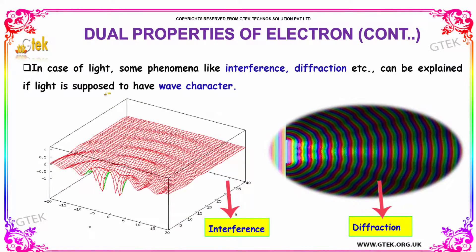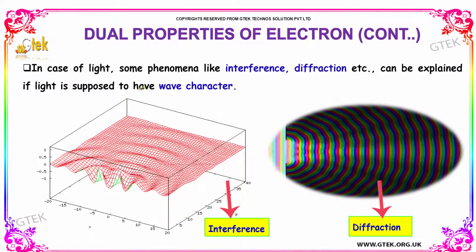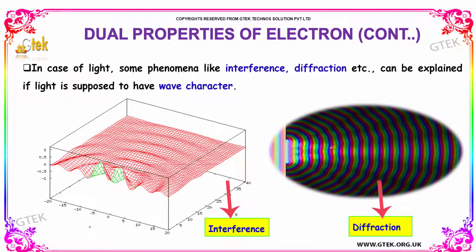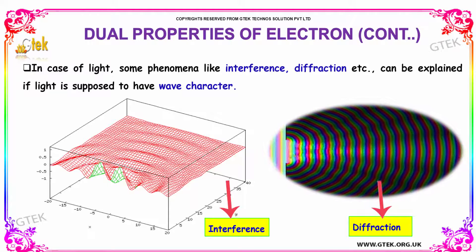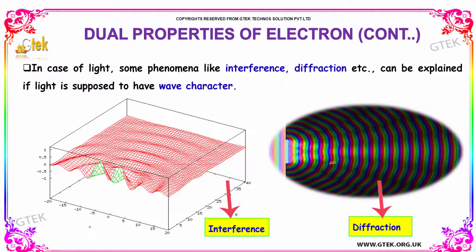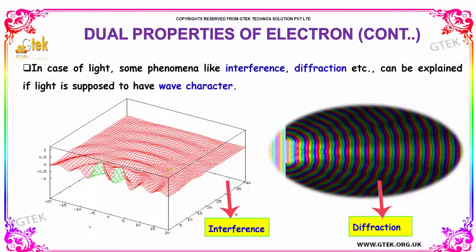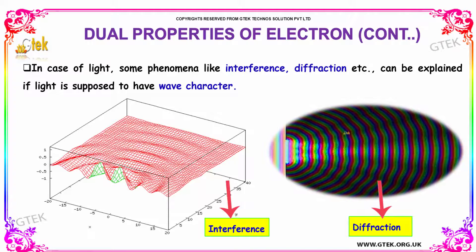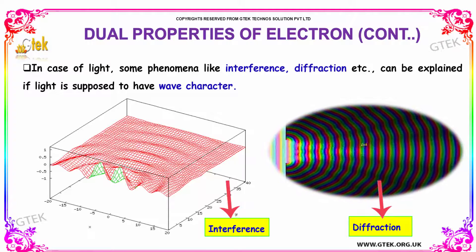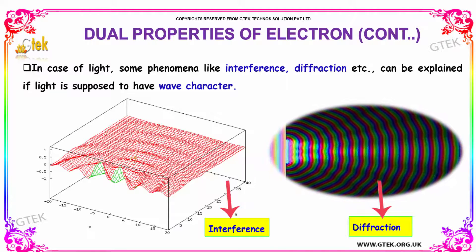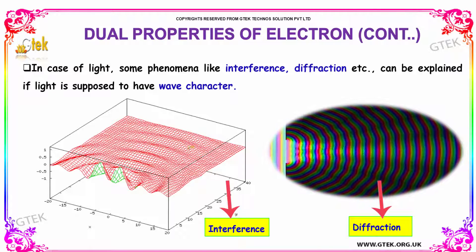In the case of light, some phenomena like interference or diffraction can be explained if light is supposed to have the wave nature. You are able to see the waves.